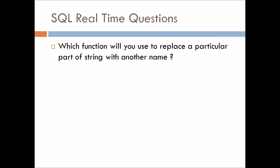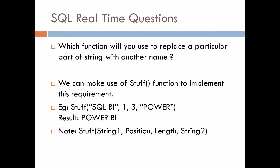Which function will you use to replace a particular part of a string with another value? We can make use of the STUFF function. STUFF takes four arguments: string one — the string we want to change; position — the starting position; length — up to what length the string is; and string two — the string we want to replace with. For example: STUFF('=BI', 1, 1, 'Power') gives the resulting value 'PowerBI' instead of '=BI'.